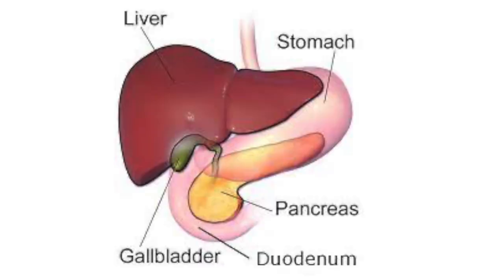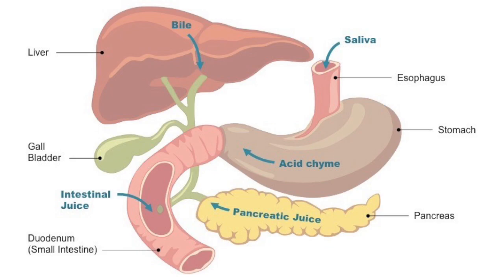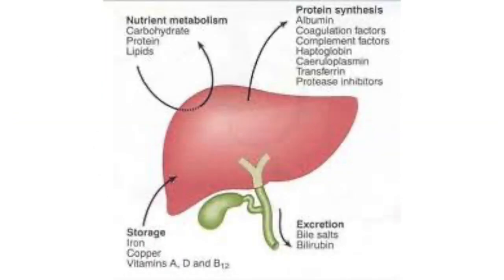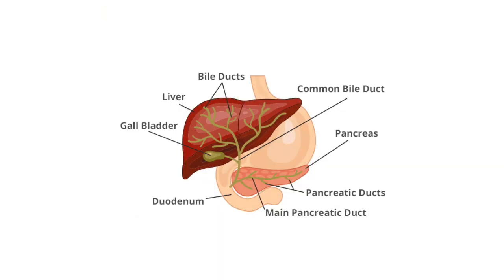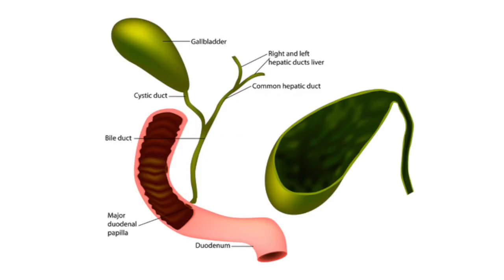Before moving on to the large intestine, let's quickly talk about the pancreas, liver, and gallbladder. The pancreas is responsible for creating digestive juices filled with enzymes that break down carbs, proteins, and fats. This juice is transported to the duodenum in the small intestine through ducts. The liver's job in the digestive system is to process absorbed nutrients from the small intestine and secrete bile into the gallbladder for storage. The gallbladder releases bile into the duodenum for absorbing nutrients and fats.